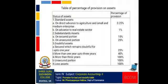The table has two columns: status of assets and percentage of provision. First, standard assets: (A) on direct advance to agriculture and small and medium enterprise, 0.25%; (B) on advance to real estate sector, 1%. Second, substandard assets: (A) on secured portion, 15%; (B) on unsecured portion, 25%. Third, doubtful assets: more than 1 year up to 3 years, 40%; more than 3 years, 100%; on unsecured portion, 100%. Fourth, loss assets, 100%.